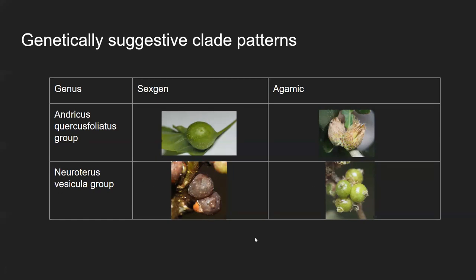This is one I recently discovered — very speculative, based on genetic evidence. The Neuroterus fasciolatus group is one of the earliest emerging sexual generation galls in the spring; it emerges right as the flower buds are breaking on white oaks, and those very young flowers seem to be what these sexual generation wasps are ovipositing into. I think what we're going to see is that they all will develop agamic galls on the filament of the male catkins.